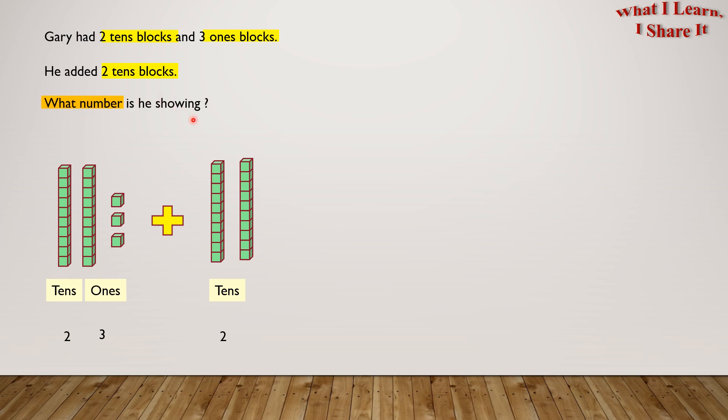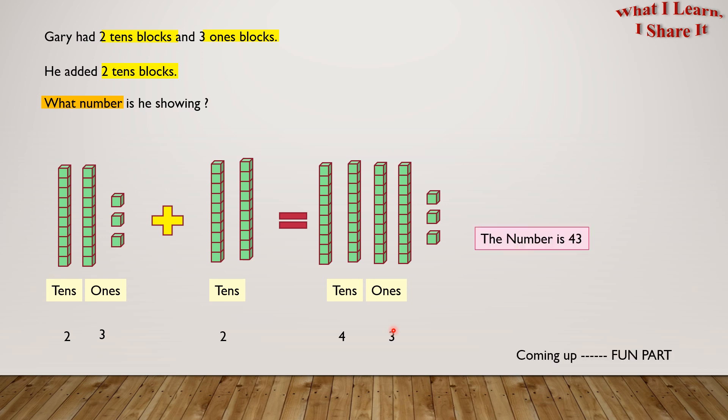What number is he showing? Let's put all the tens blocks together and all the ones blocks together. So we get 4 tens and 3 ones. So the number is 43.